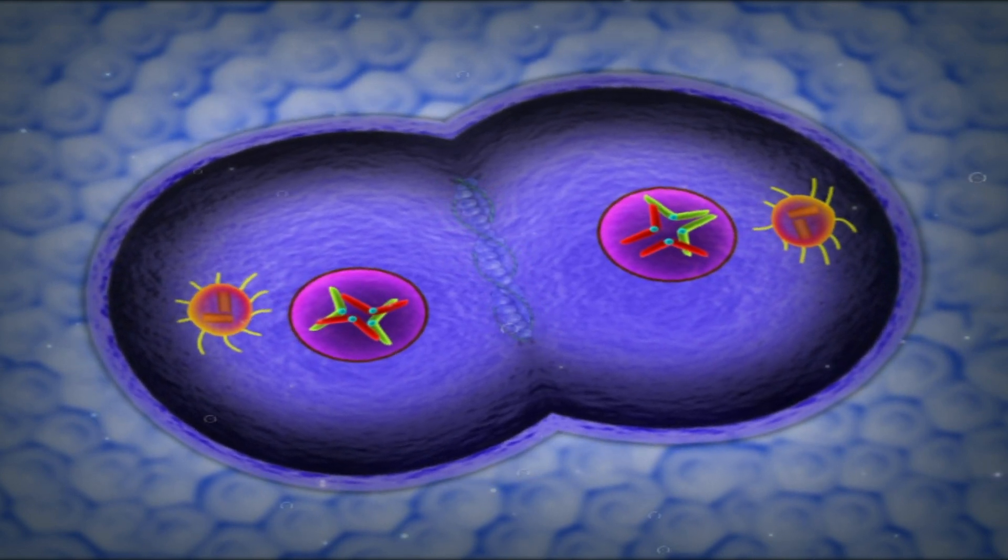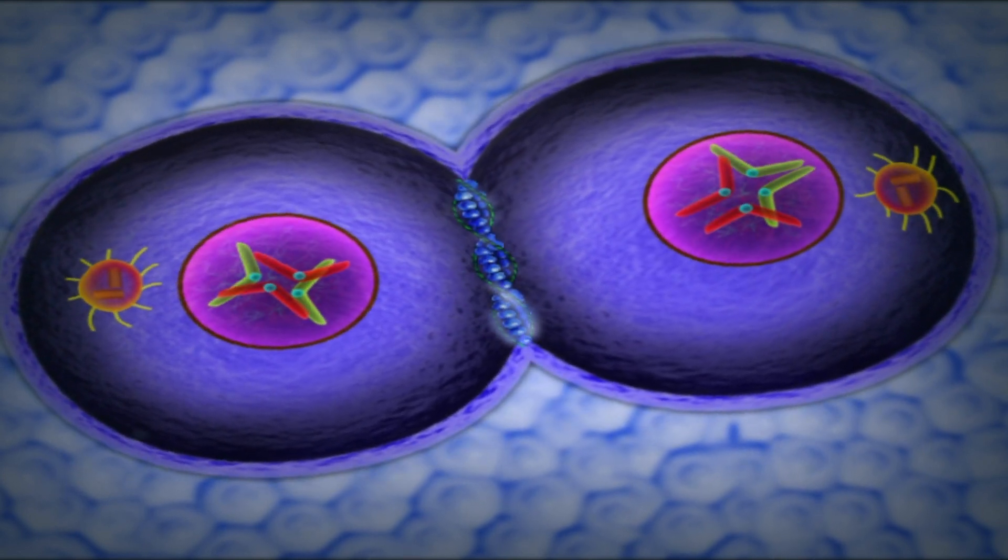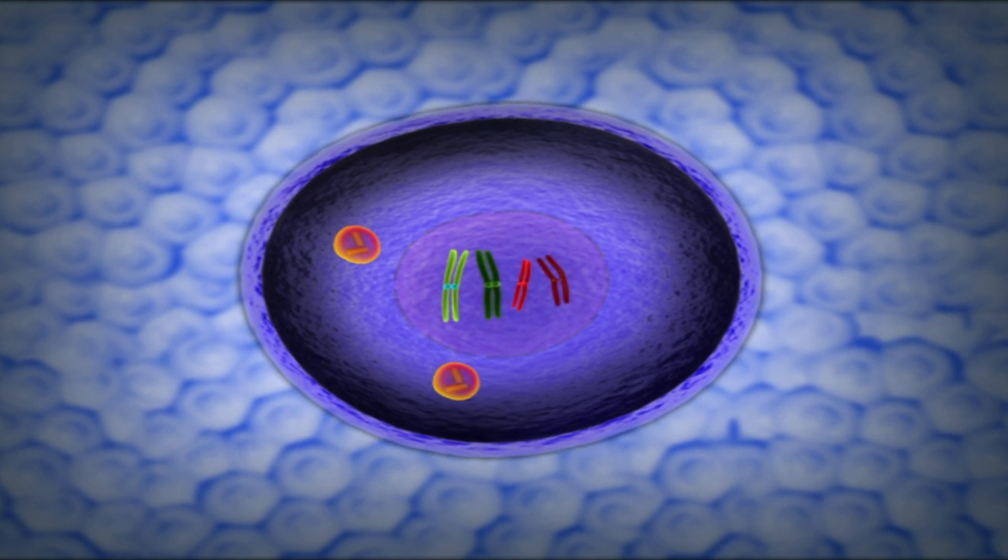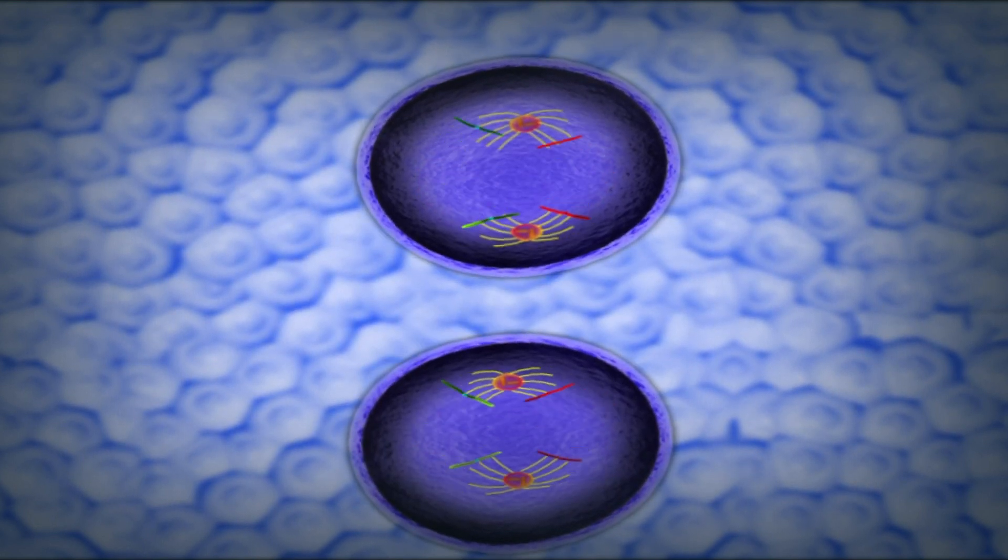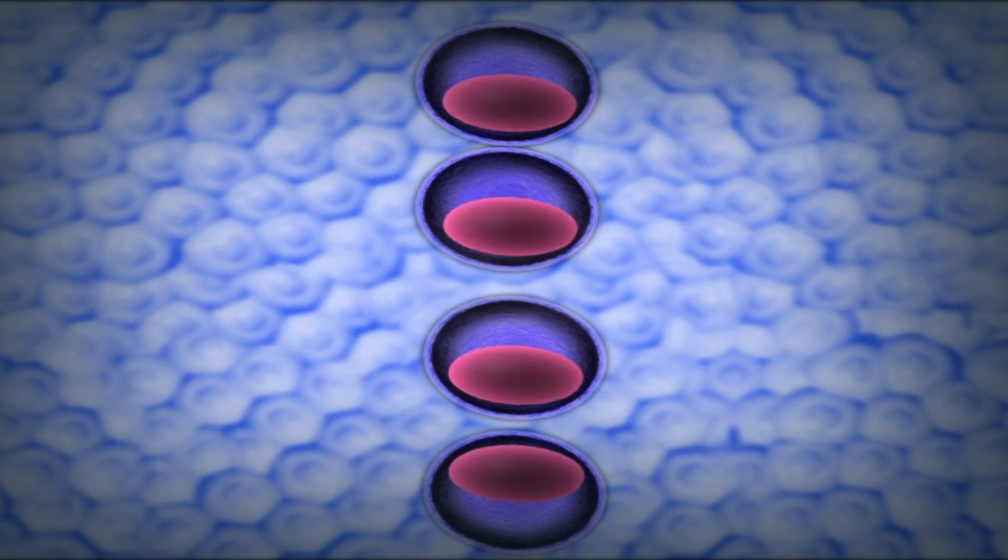The process of mitosis is followed by cytokinesis, or division of the cytoplasm. Meiosis is another form of cell division observed in eukaryotic cells, particularly the gametes.